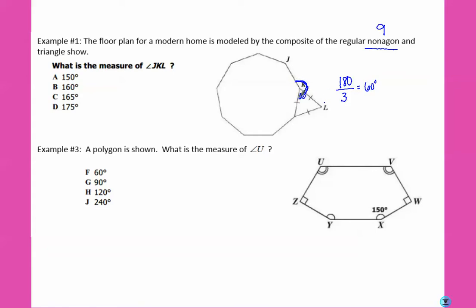For our interior angle, we know that 360 divided by nine gives us that an exterior would be 40 degrees. So the interior, subtract that from 180, must be 140. Since this whole thing makes a circle, 360 minus 140 minus the 60 for the triangle leaves us with 160 degrees for our outside angle, so it's answer B.